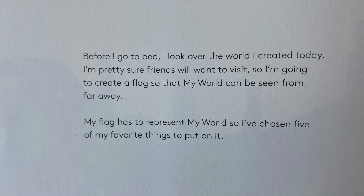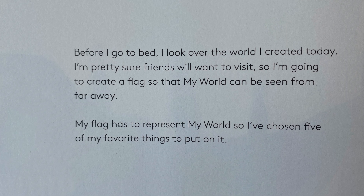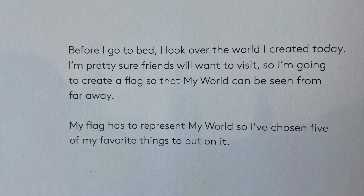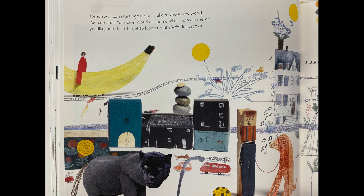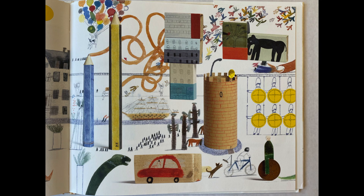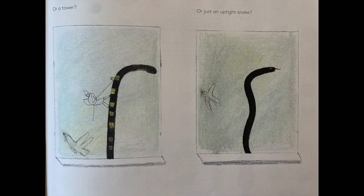Before I go to bed, I look over the world I created today. And I'm pretty sure friends will want to visit. So I'm going to create a flag so that my world can be seen from far away. My flag has to represent my world, so I've chosen five of my favorite things to put on it. I also only use three colors — this makes it look more sophisticated. Tomorrow I can start again and make a whole new world. You can start your own world as soon and as many times as you would like. And don't forget to look at real life for inspiration. Is that a lamppost you can see outside your window? Or a tower? Or just an uptight snake?